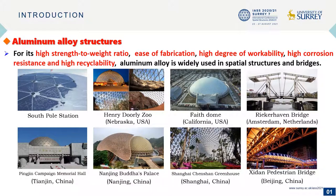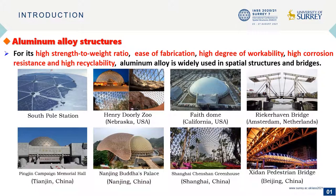Nowadays, aluminum alloy is widely used in spatial structures and bridges all over the world, because the aluminum alloy has the advantages of high stress-to-weight ratio, ease of fabrication, high degree of workability, high corrosion resistance, and high recyclability.